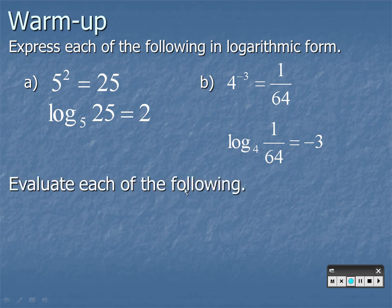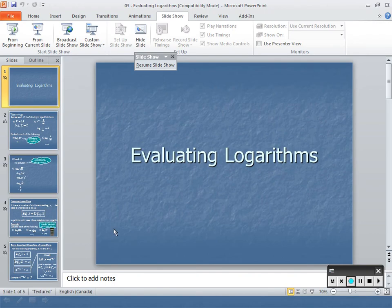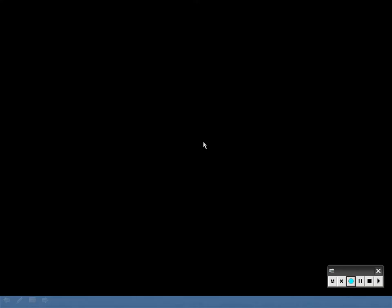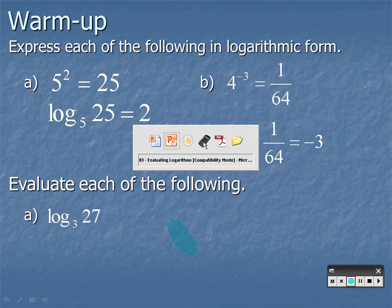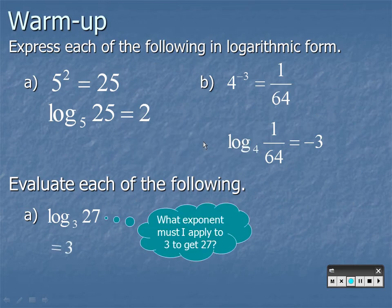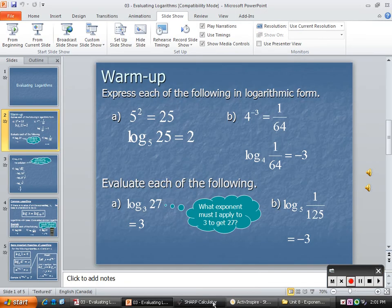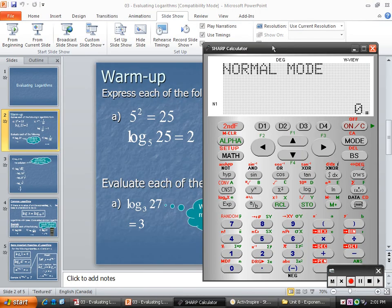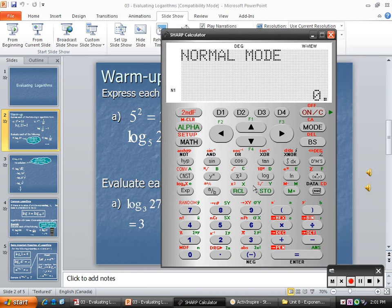So now, using that knowledge, we're going to evaluate each of the following. What is this asking us for? Say it carefully. Say it with me. The power I put on 3 to get 27. The power I put on 3 to get 27. What power do you put on 3 to get 27? And you might know it in your head, and that's fine. But what I really want to talk about is what do you do in your calculator to get these answers.